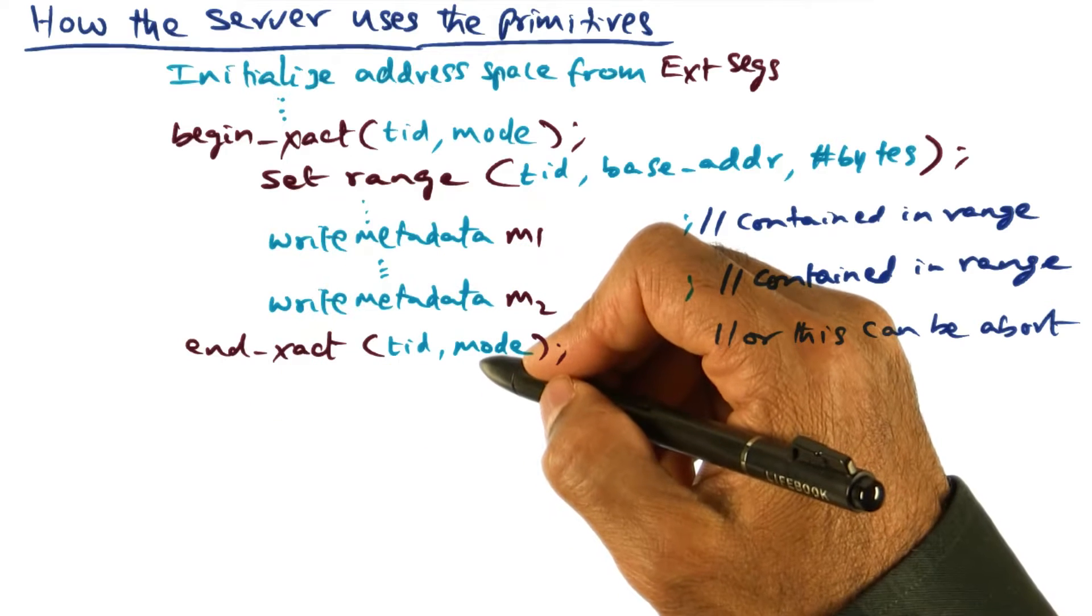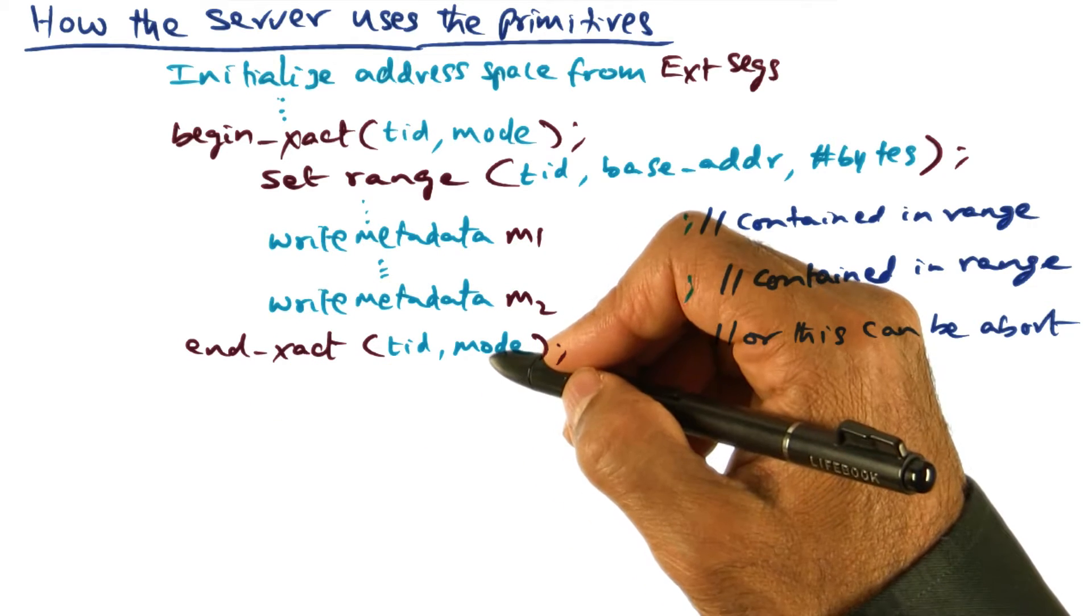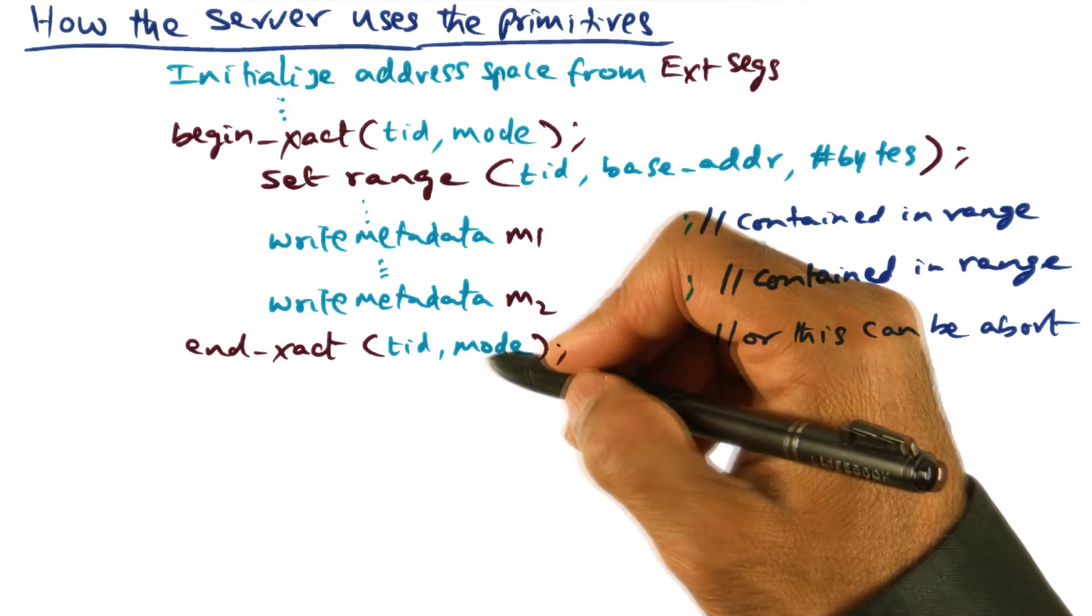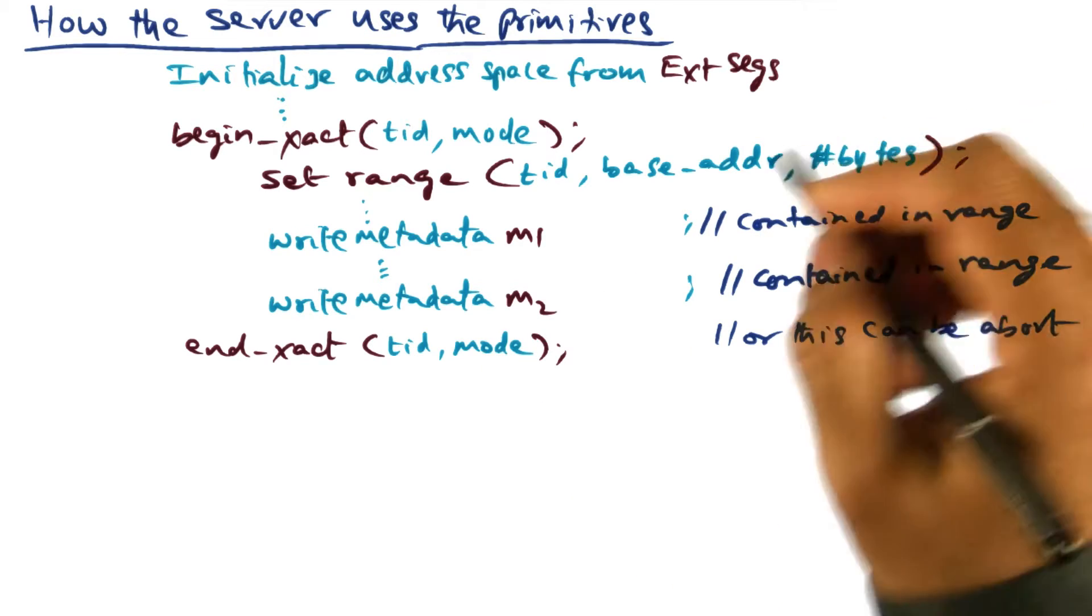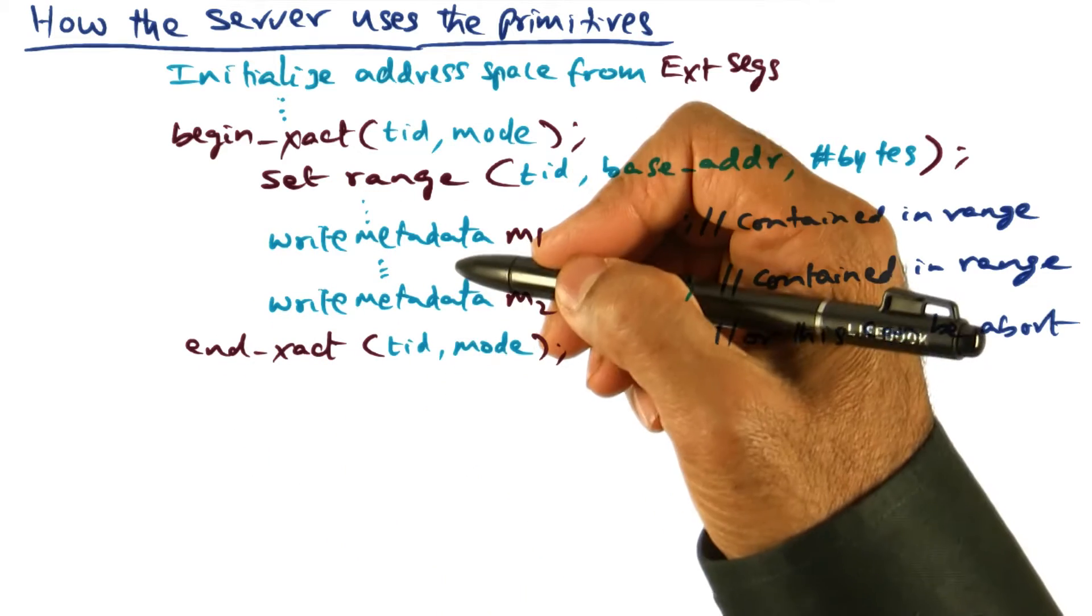And in the body of the code, there are going to be regions where they want to manipulate persistent data structures. And for that portion of the code, they're going to say begin transaction, end transaction.